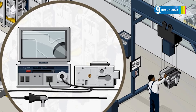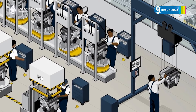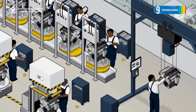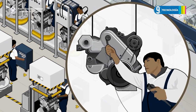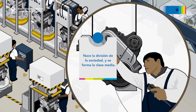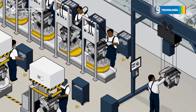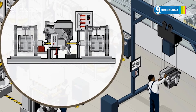El primero en utilizar este método fue Henry Ford, de ahí se deriva su nombre: Fordismo. En este sistema aparecen los obreros especializados con un estatus mayor al que trabajaba en el sistema taylorista. Aquí es donde nace también la división de la sociedad y se forma la clase media. Estos obreros ya eran ingenieros, administradores, entre otros.